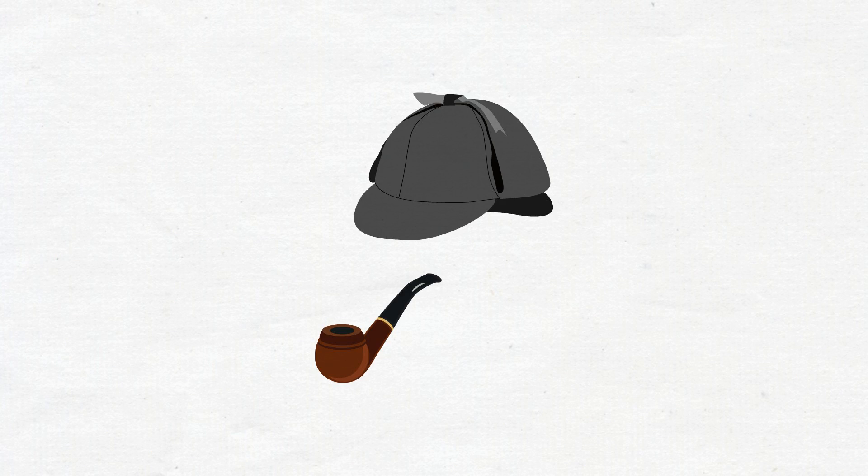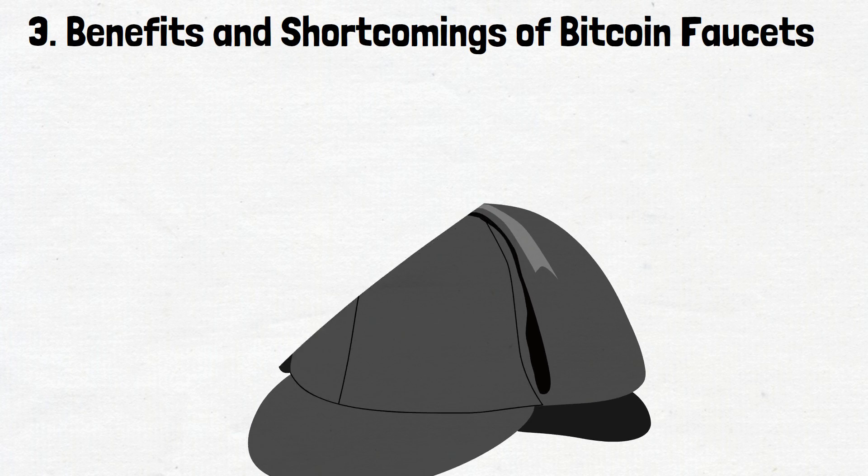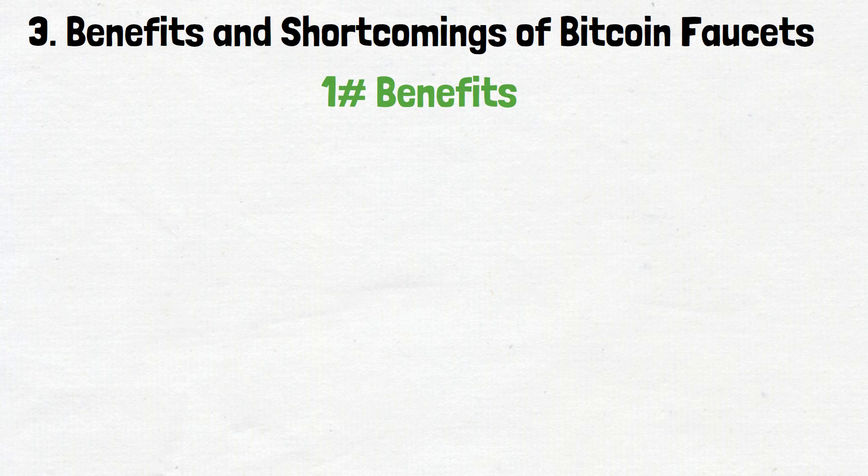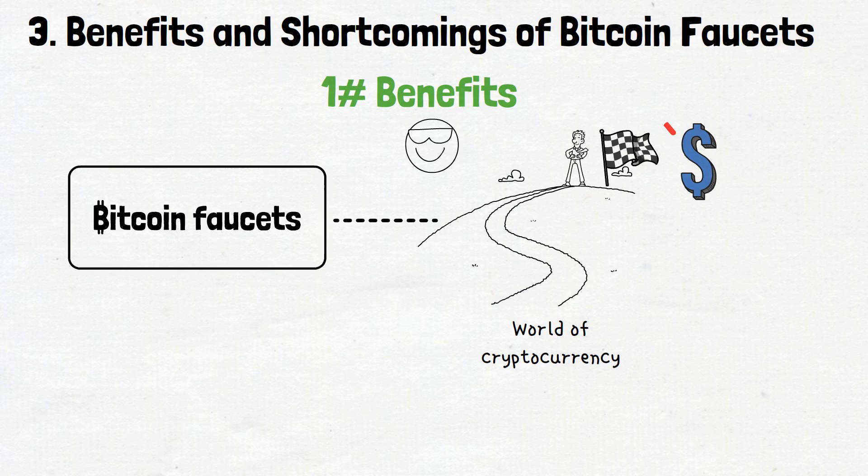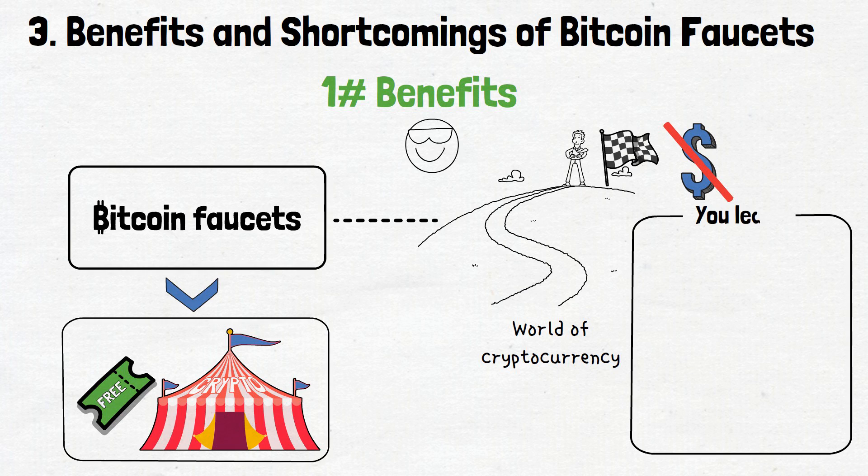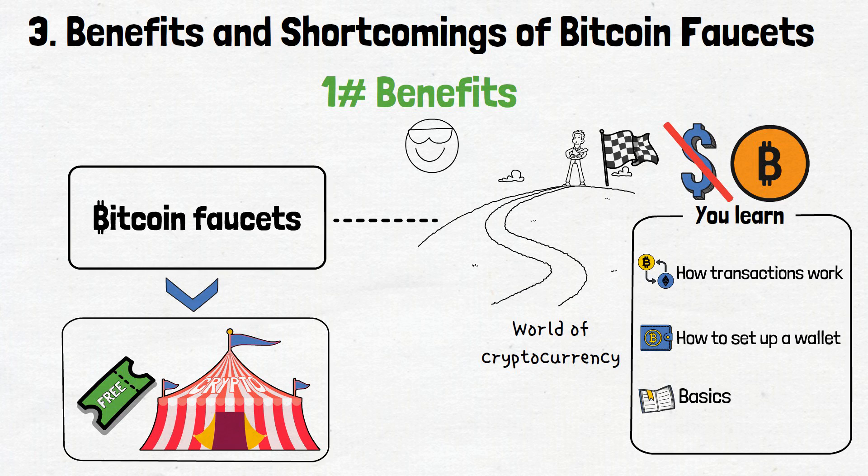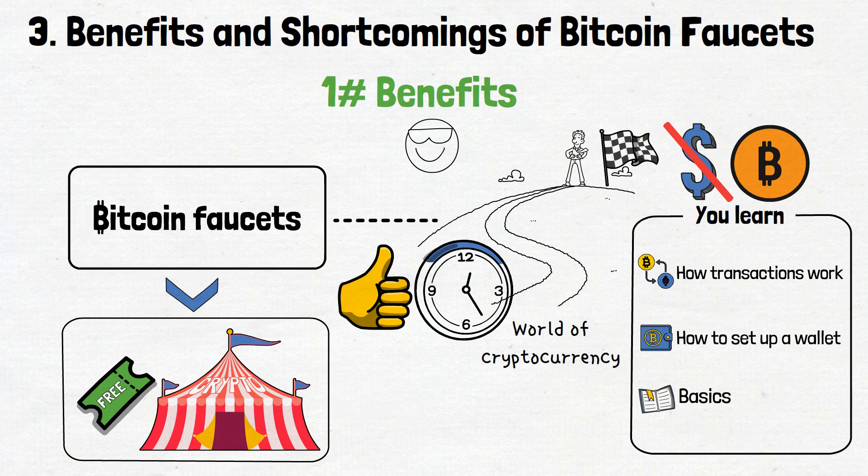So now, it's time to put our detective hats on and investigate the benefits and shortcomings of Bitcoin faucets. First, let's talk about the benefits. One of the coolest things about these faucets is that they are a fantastic way to get started in the world of cryptocurrency without spending a dime. It's like getting a free ticket to the crypto carnival. You learn how transactions work, how to set up a wallet, and all the basics, all while earning a bit of Bitcoin on the side. Not bad for something that just asks for a little bit of your time, right?